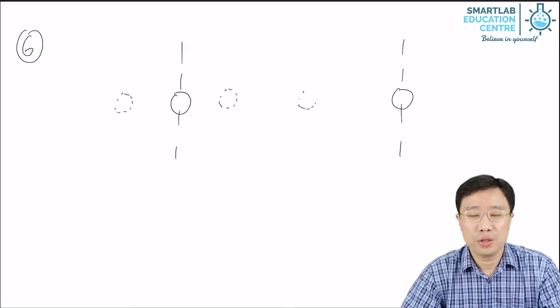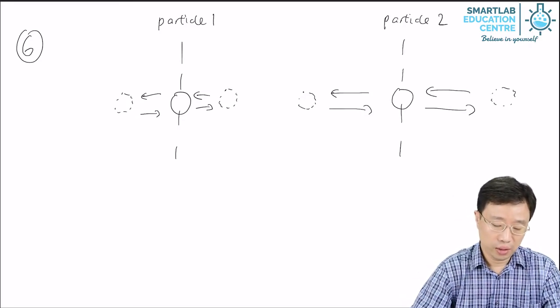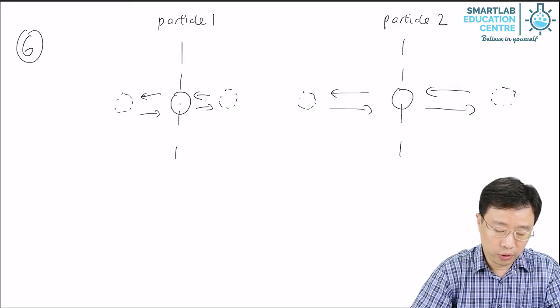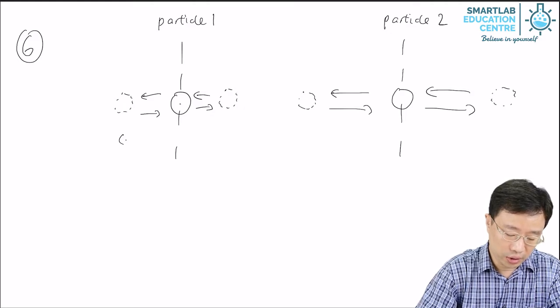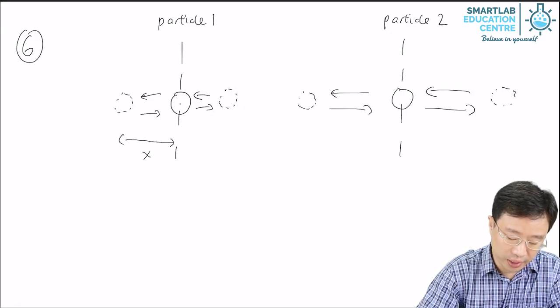Point number six shows two particles. Particle one, the furthest that particle one can go from the rest position is this distance. Let's call it x.